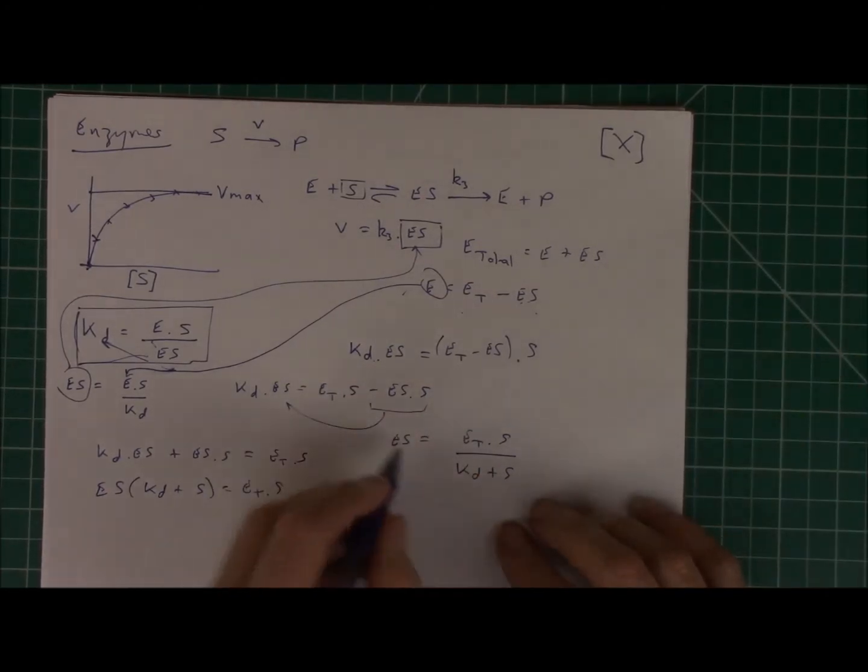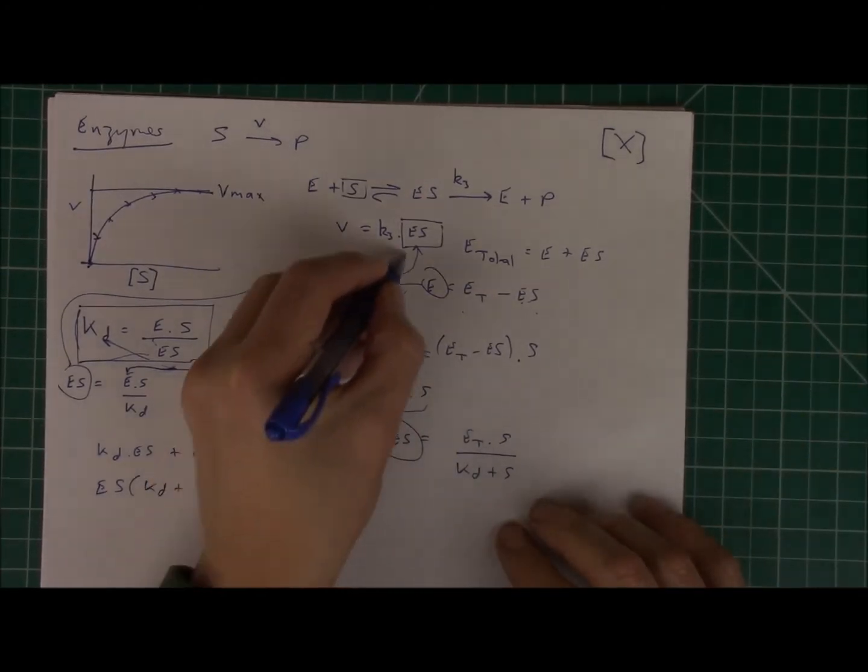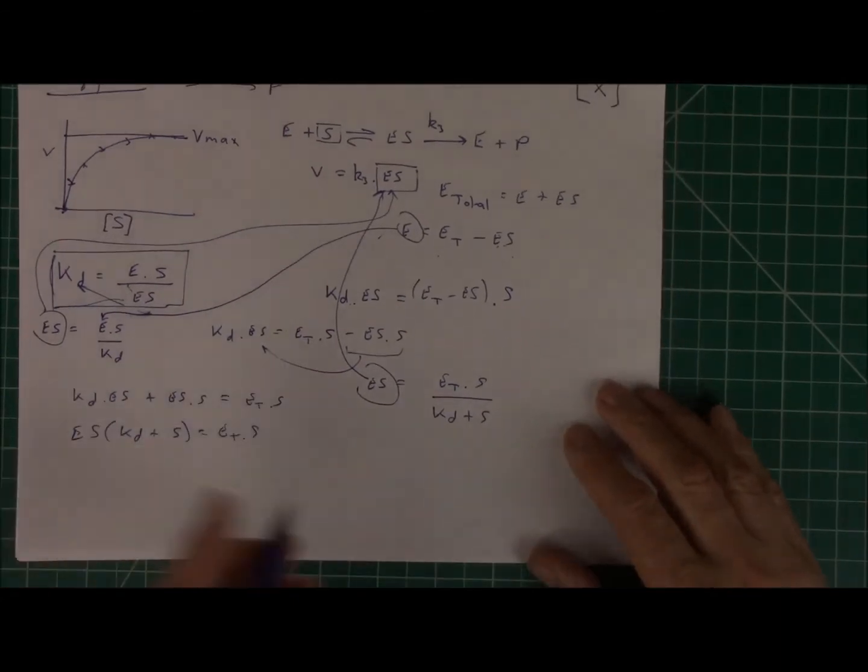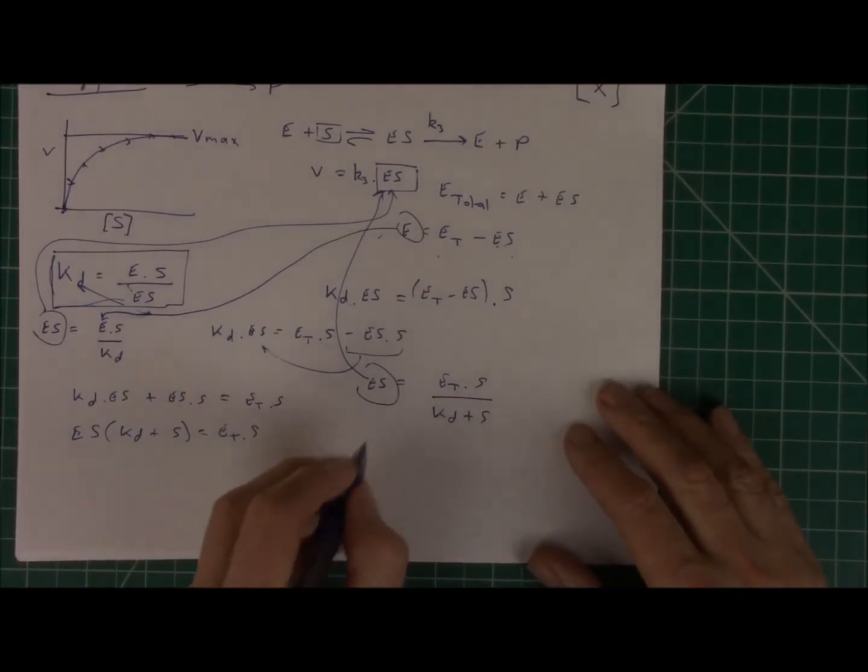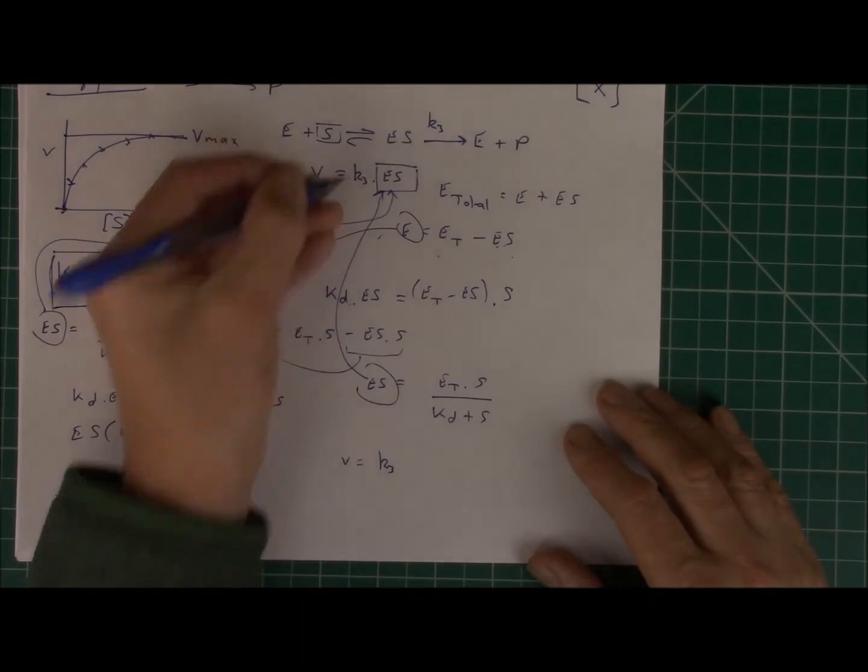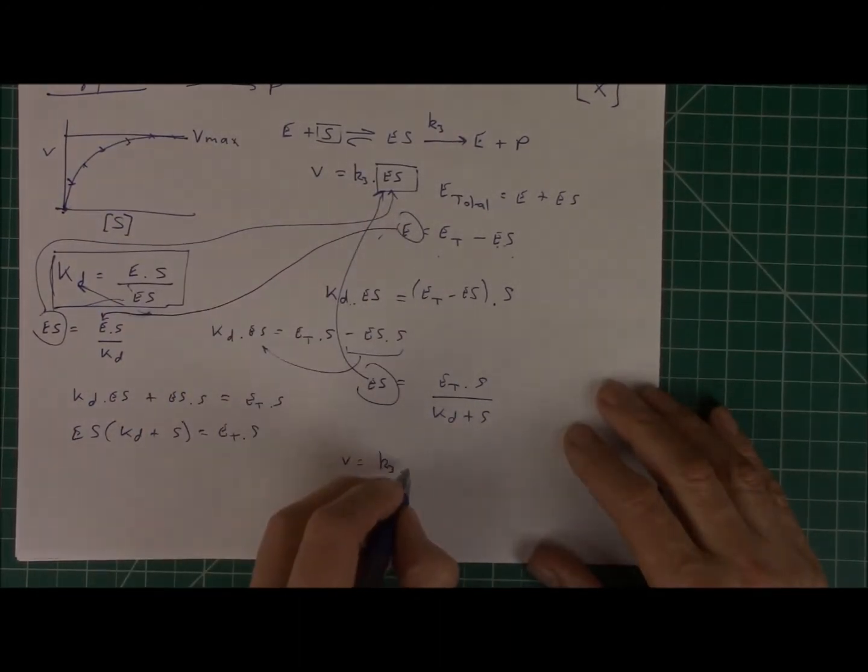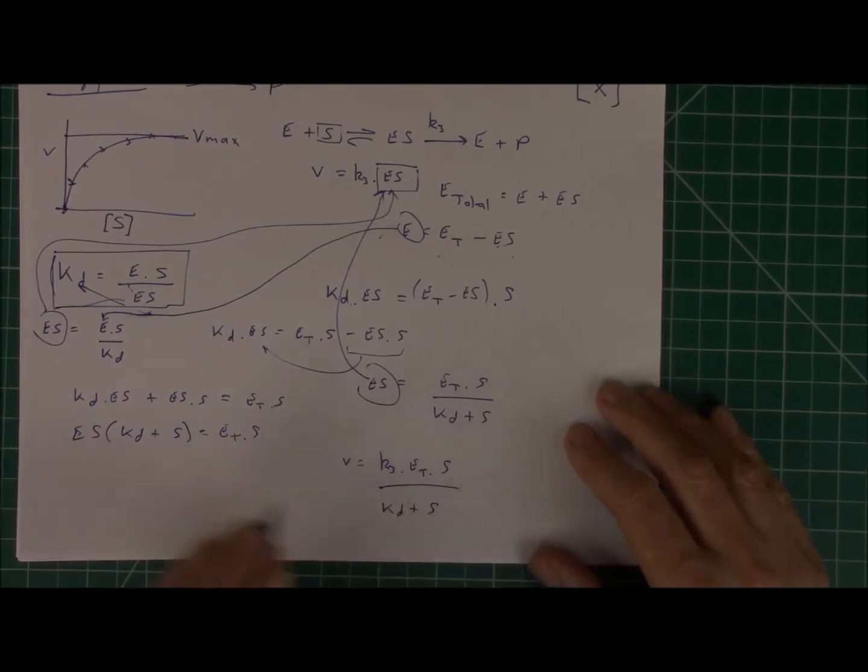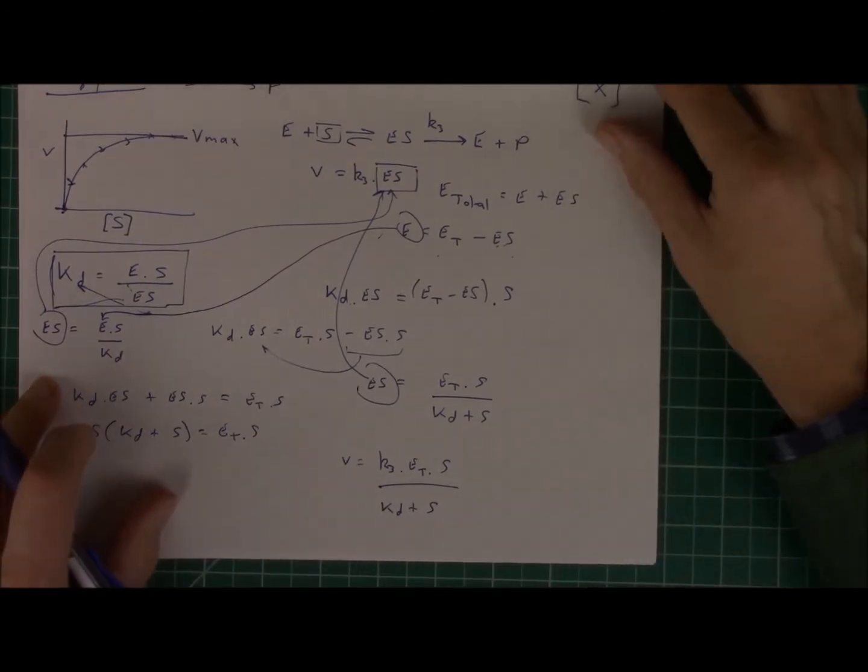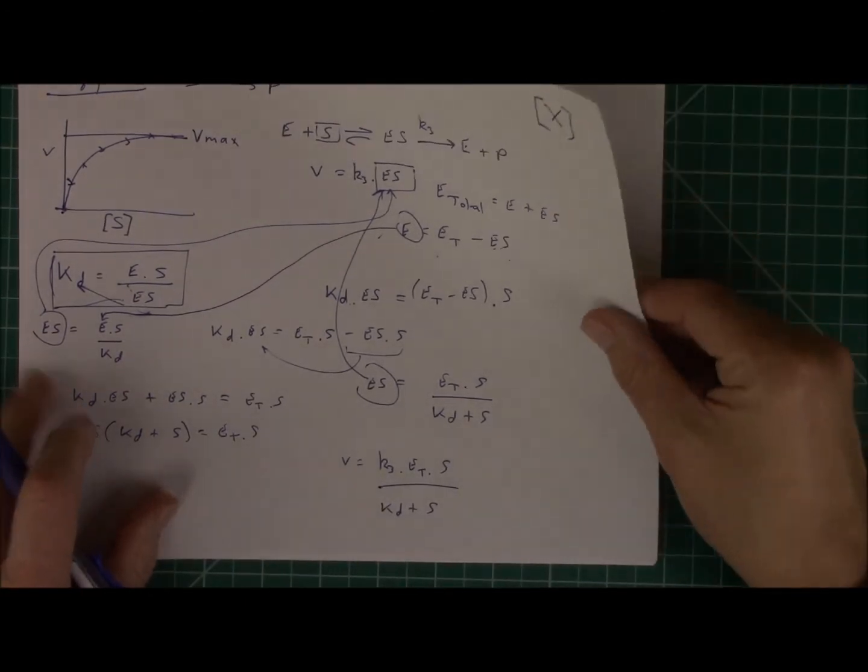So what I'll do is I'll insert this into here. So when we do that, the velocity then equals K3 times ES, which is ET, times S over KD plus S. And that's almost there, so let's go to a new page and continue.